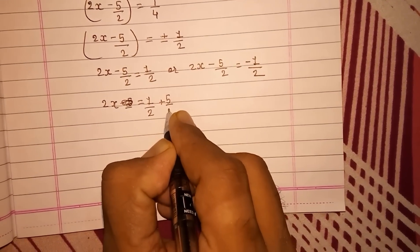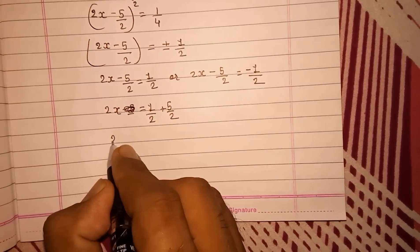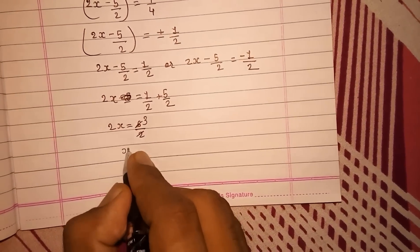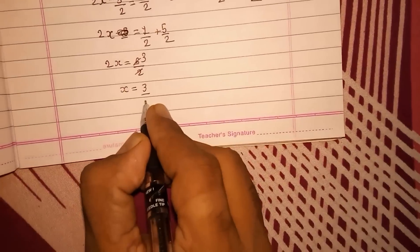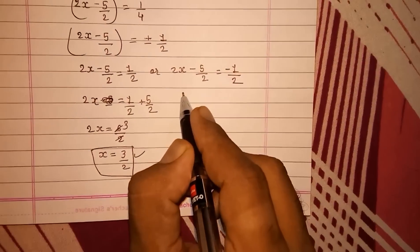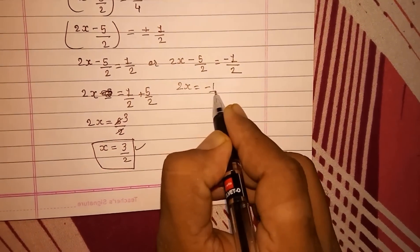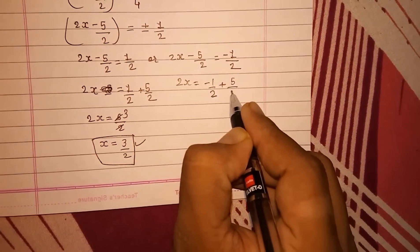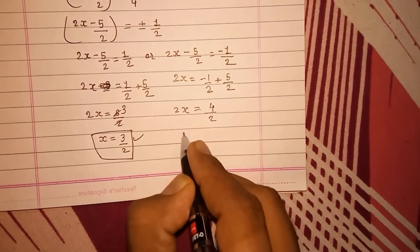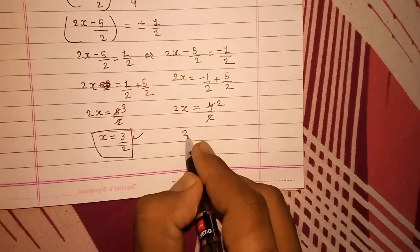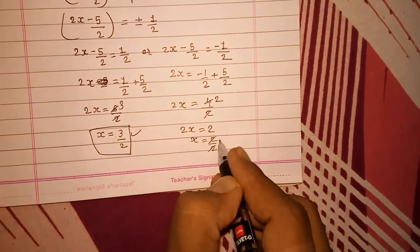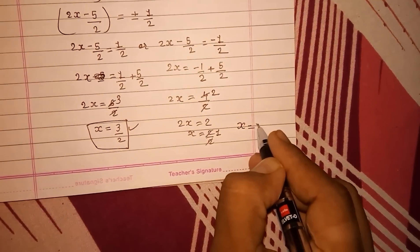Take this 5 by 2 on the other side. So 2x minus 5 by 2 plus 5 by 2 gives you 4 by 2, and here 2x is equal to 2. x is equal to 2 by 2 gives you 1. So here x is equal to 1.